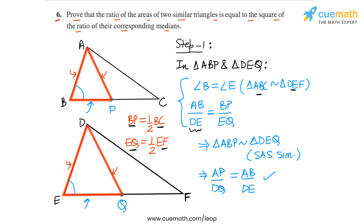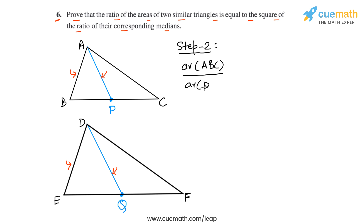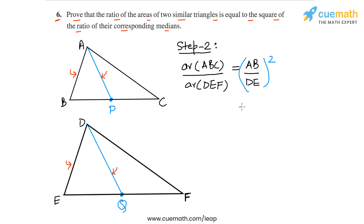Now let's come to step two. We simply make use of the fact that the ratio of areas of two similar triangles equals the square of the ratio of corresponding sides. So area of triangle ABC by area of triangle DEF equals (AB/DE) squared. From the previous step we showed that AB by DE equals AP by DQ, so we can substitute: instead of AB by DE, we write AP by DQ, giving us (AP/DQ) squared.